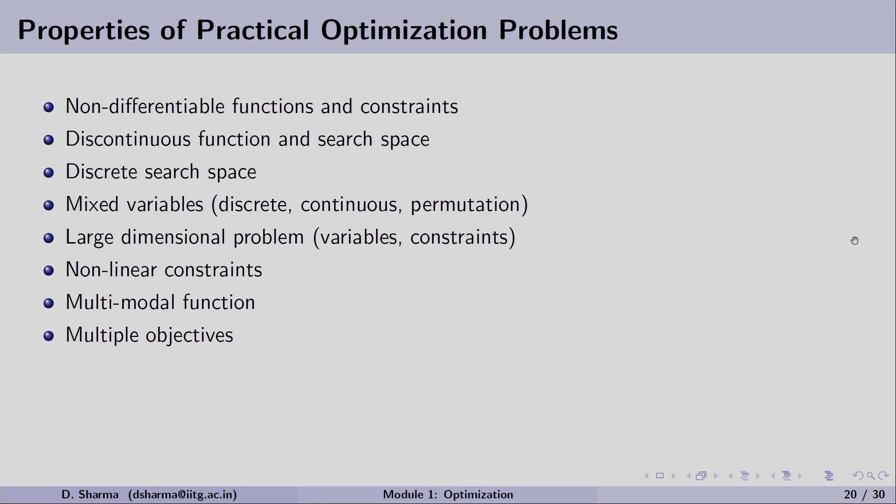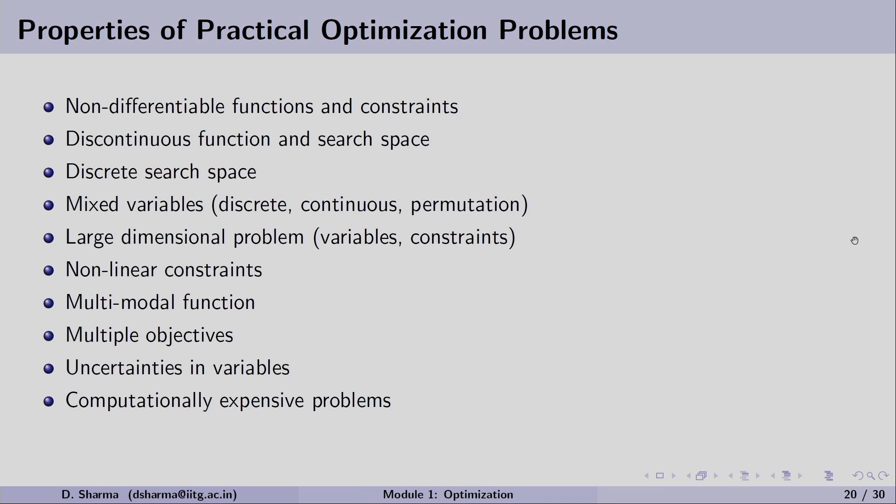Then comes multi-objective optimization. As our course is divided into single-objective and multi-objective optimization, multi-objective means we are solving a problem with more than one objective, meaning there are multiple optimal solutions — generally referred to as Pareto-optimal solutions. Can our algorithm give those Pareto-optimal solutions? That is a challenge. Uncertainty in variables, as discussed earlier, can make our optimum solution infeasible, so we look for a reliable solution under variable uncertainty.